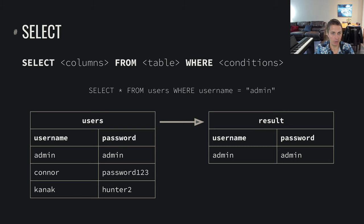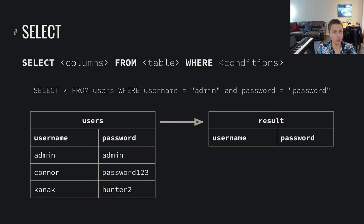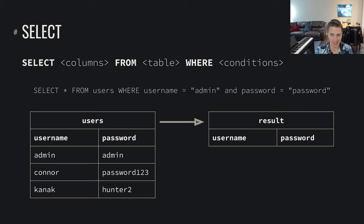We might also run Select Star From Users Where Username Equals 'admin' to find information about a particular user. We query for everything about users whose username is admin, and it returns that one user's information. Alternatively, for a login operation, we might query for users whose username is admin and password is 'password'. Since the admin user's password is 'admin', no rows are returned — there are no users matching both conditions, so the result is empty.